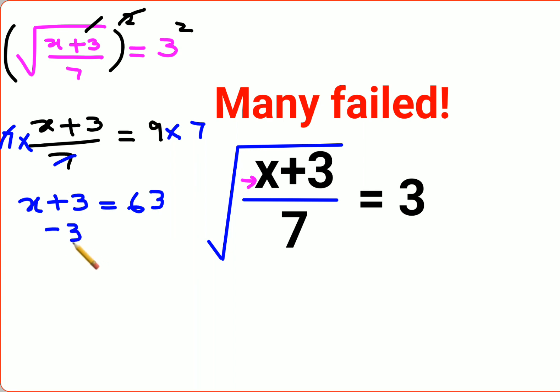Now in order to find the value of x, you will subtract 3 from both sides. So we will say x equals to 63 minus 3, that gets you 60.